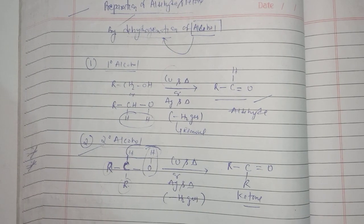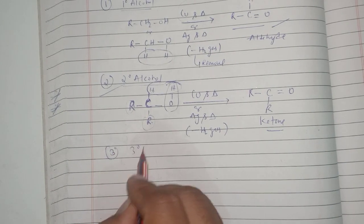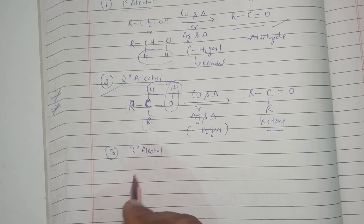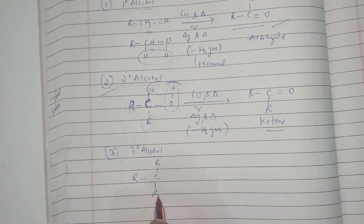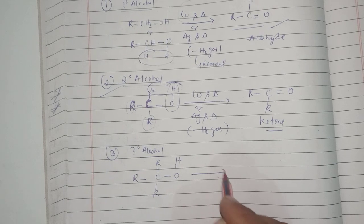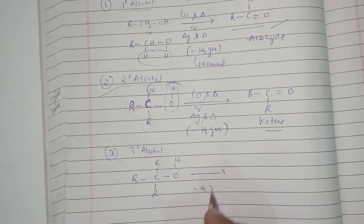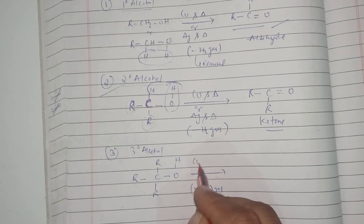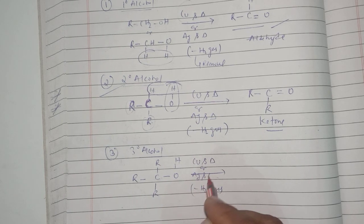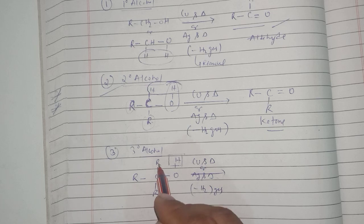Now let us go to the three-degree alcohol. In a three-degree alcohol I can show: R-C(R)(R)-OH. This alcohol also undergoes dehydrogenation when treated with copper under heating conditions or silver under heating conditions, so there is a removal of hydrogen taking place.